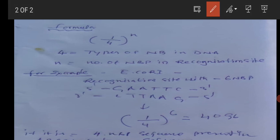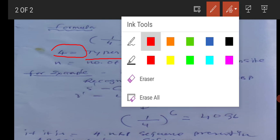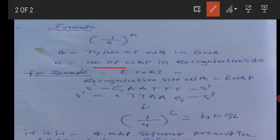This is the formula: 1/4^n, where four is the types of nucleotide bases in DNA. They have already given this. If you look at the question, they are saying four types of nucleotide bases in DNA. And what is n? N means the number of nucleotide bases in the recognition site. We have to find the number of base pairs in the recognition site.